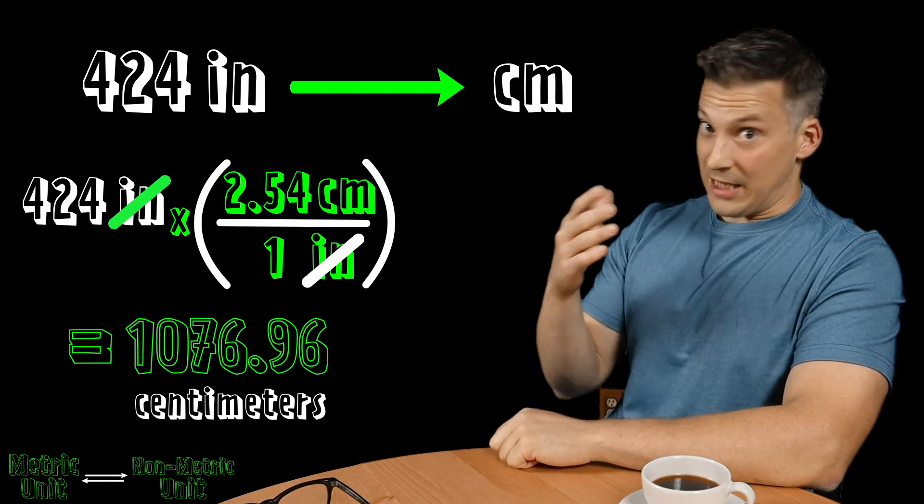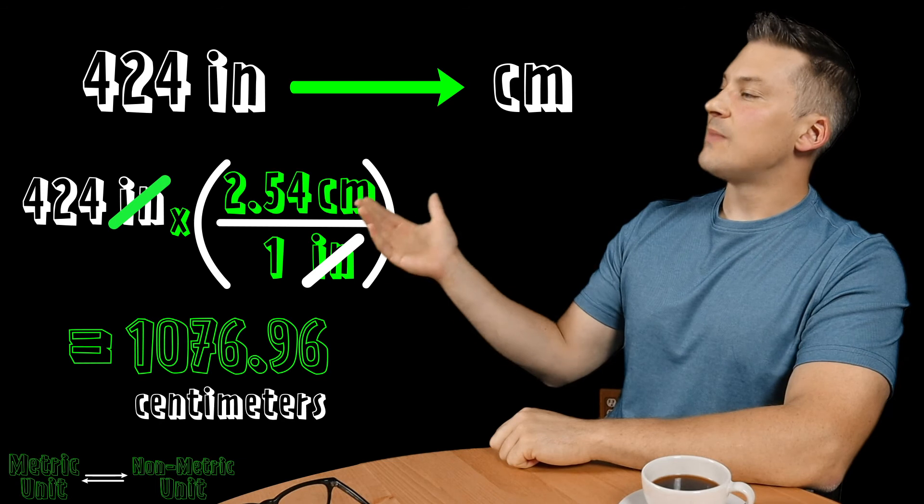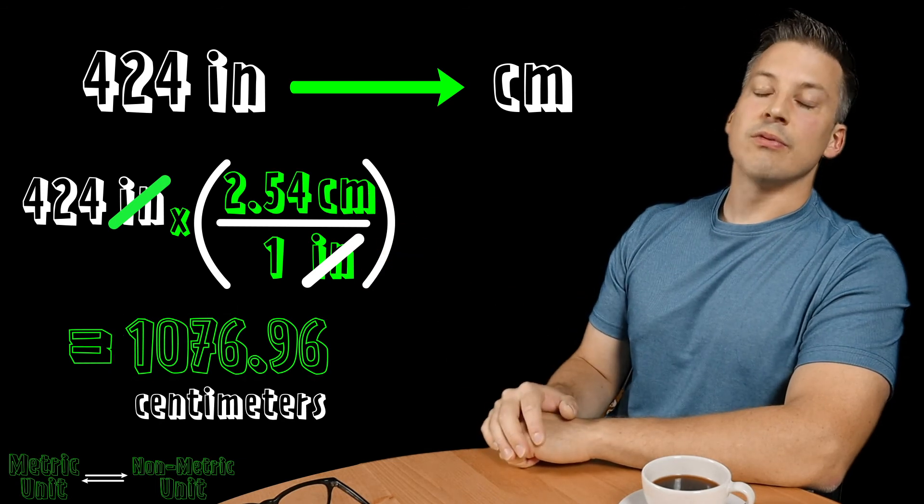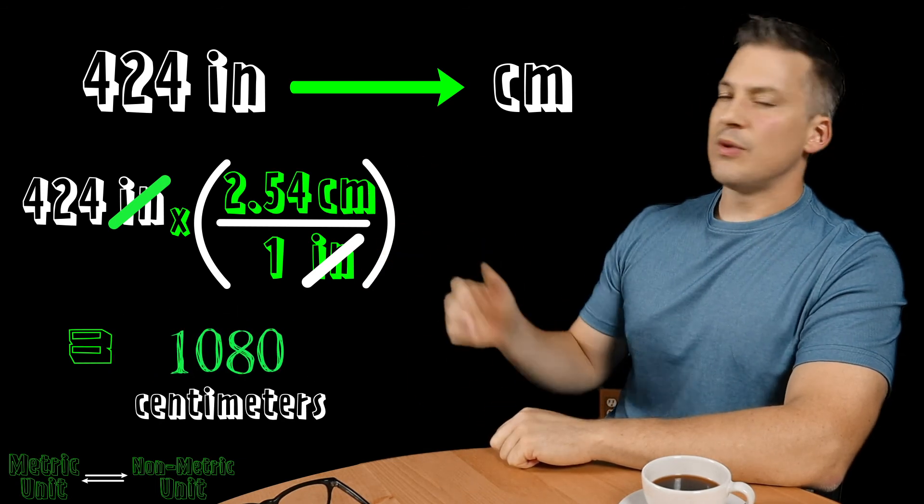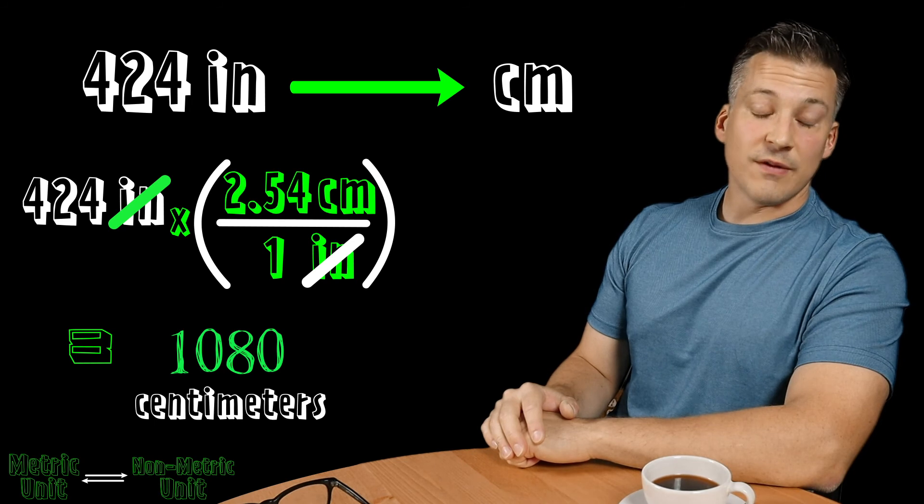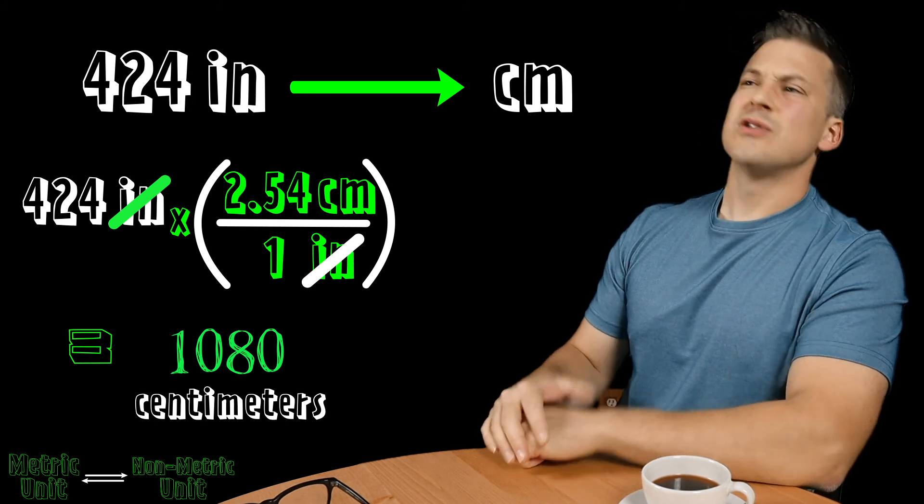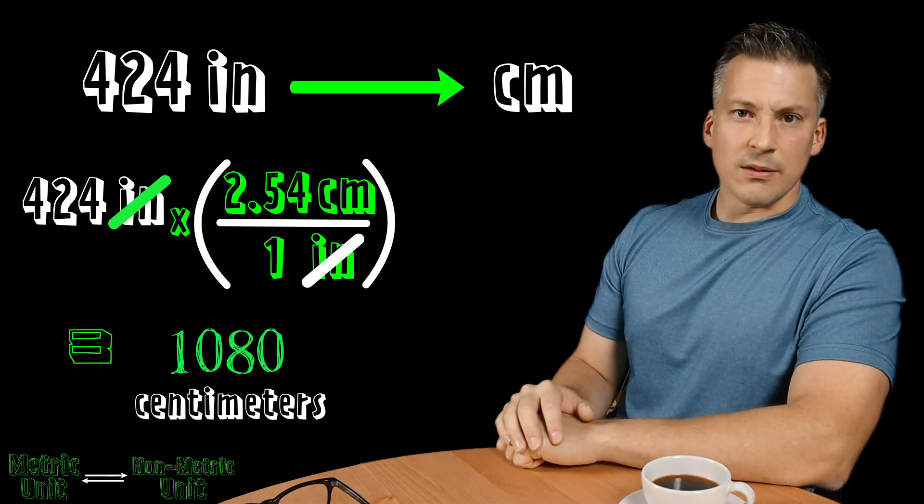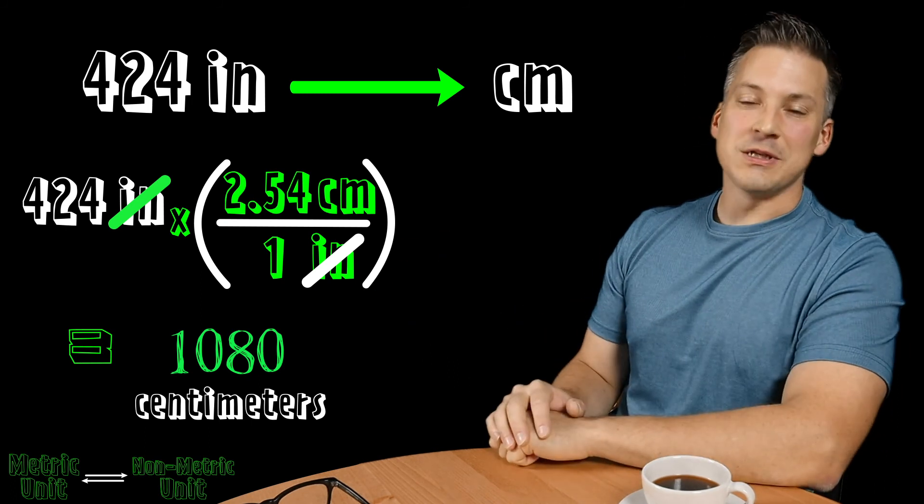That means my answer should have also three significant figures. I know I also multiplied here by a value of 2.54. That has three sig figs too, so obviously they're both the same, so the answer would have three significant figures.